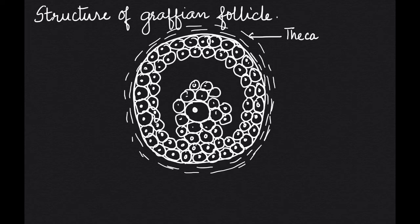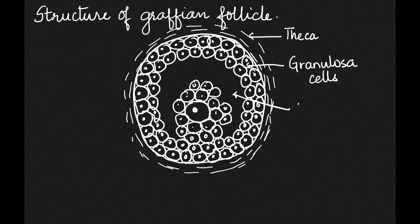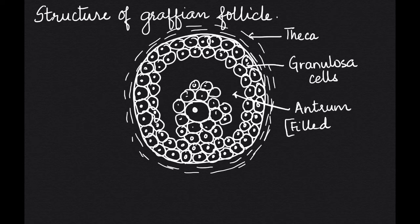The cells inside the Graafian follicle are called the granulosa cells or the follicular cells. As I said before, there is a cavity present inside. This cavity is called the antrum, and the antrum is filled with a fluid that is called liquor folliculi.